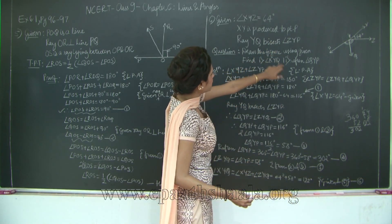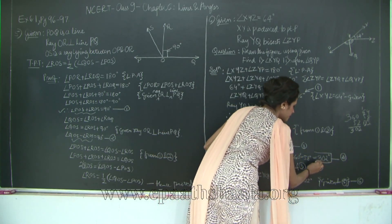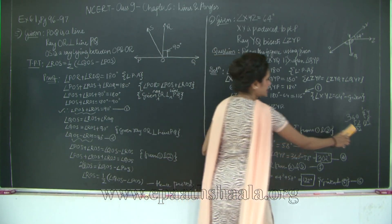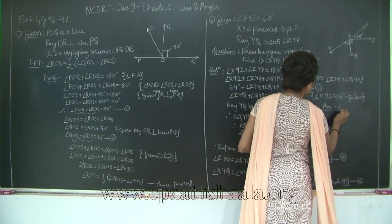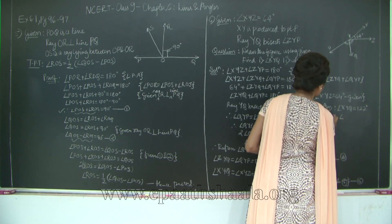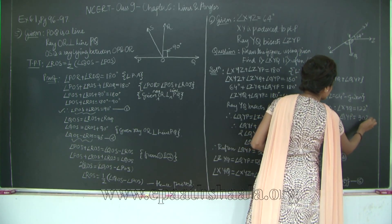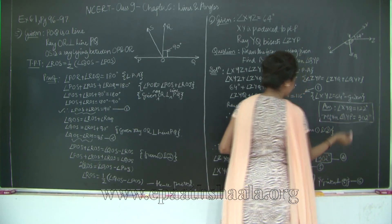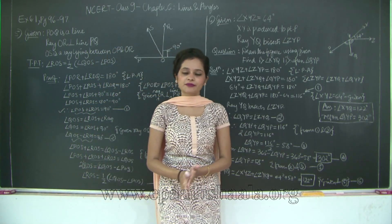Our answers are: angle XYQ equals 122 degrees and reflex angle QYP equals 302 degrees. This winds up Exercise 6.1. We will take a look at the remaining chapter in the forthcoming classes.